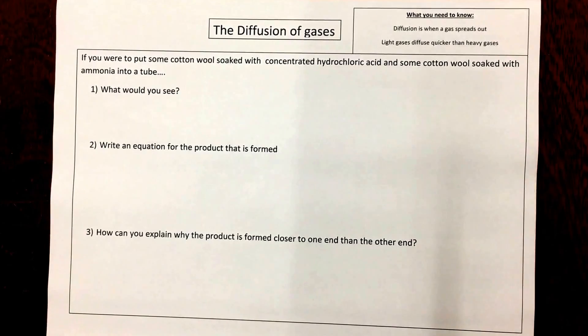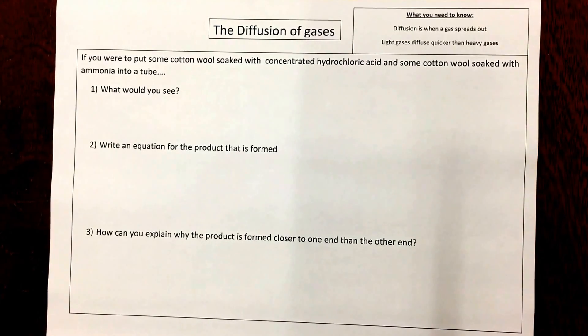So the question asks, if you were to put some cotton wool soaked with concentrated hydrochloric acid and some cotton wool soaked with ammonia into a tube, firstly what would you see? Question 2, write an equation for the product that is formed and part 3, how can you explain why the product is formed closer to one end than the other?